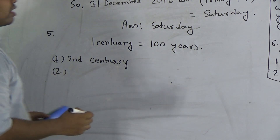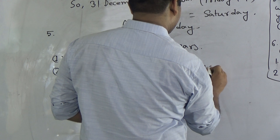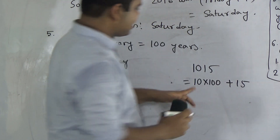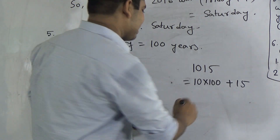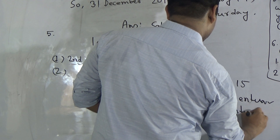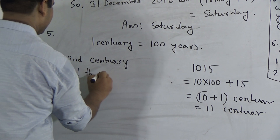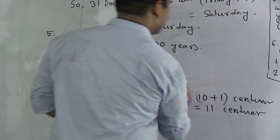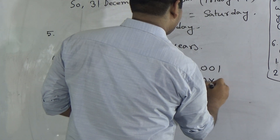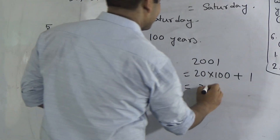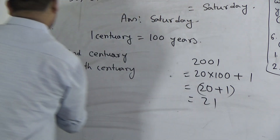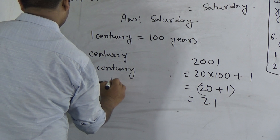Part two: 1015. We write this as 10 × 100 plus 15, meaning the 10th century has been completed and another century comes — that means 10 plus 1 equals 11th century. Part three: 2001. We write this as 20 × 100 plus 1, meaning 20 centuries have been completed and another century has come, so 20 plus 1 equals 21st century.